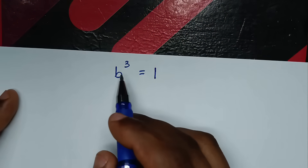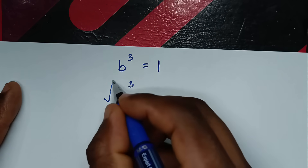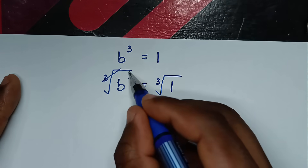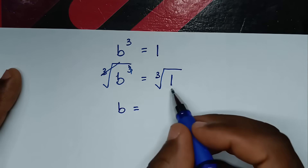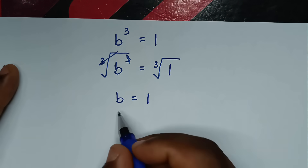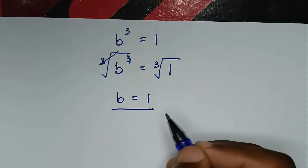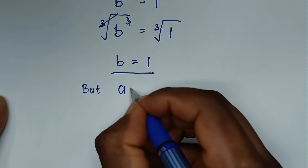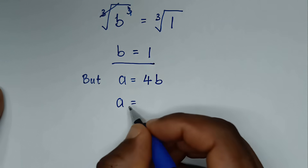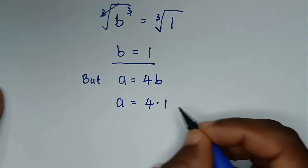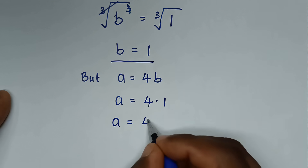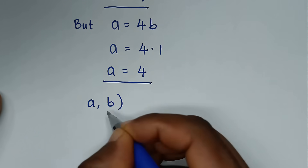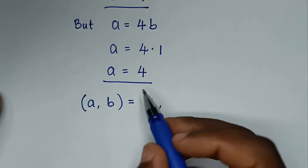Taking the cube root of both sides: b = cube root of 1 = 1. Now to find a: since a = 4b, we get a = 4 × 1 = 4. Therefore, (a, b) = (4, 1).